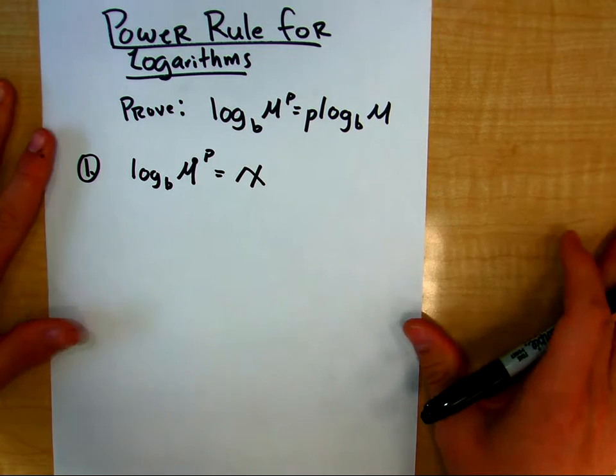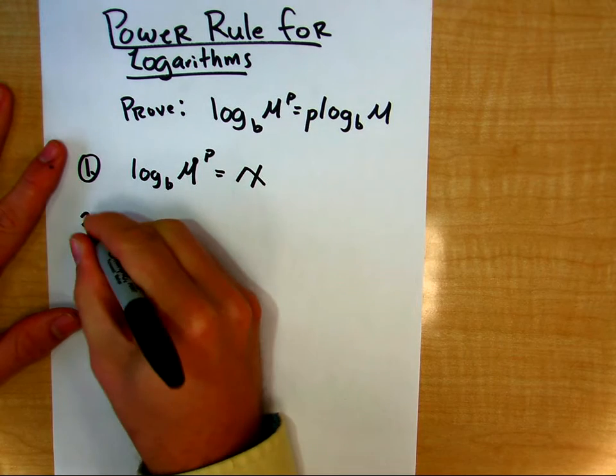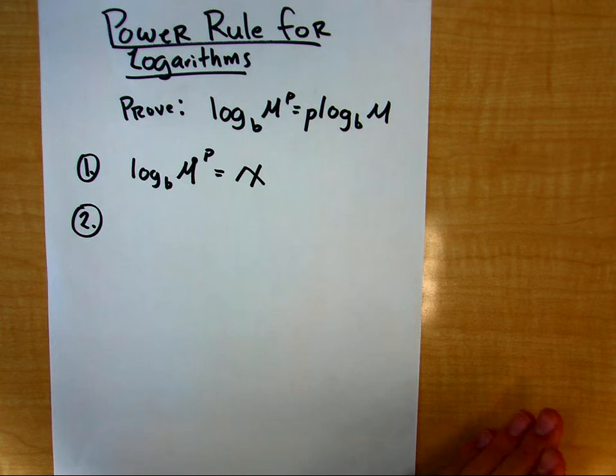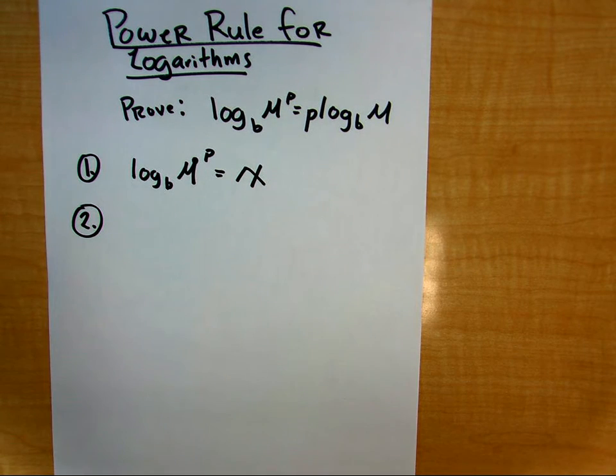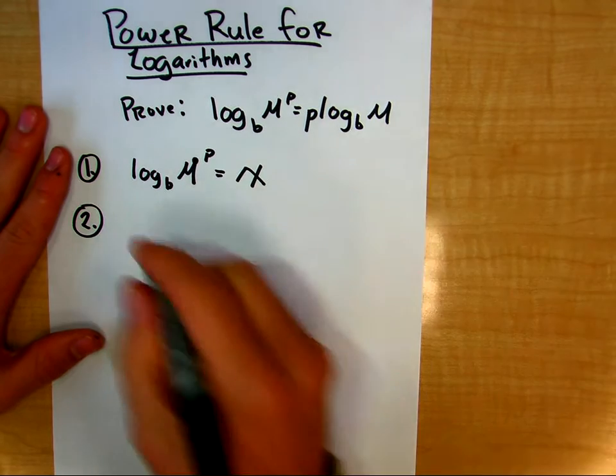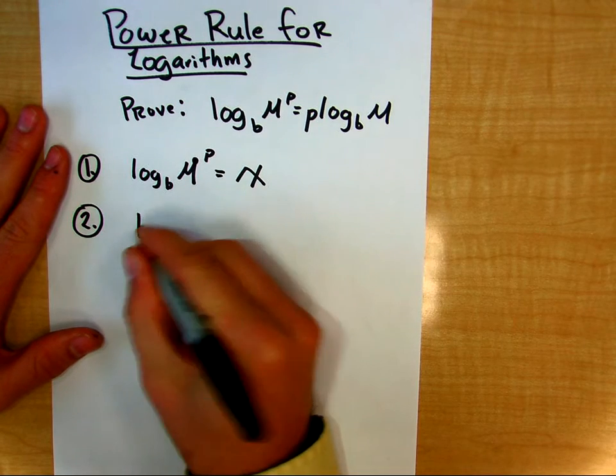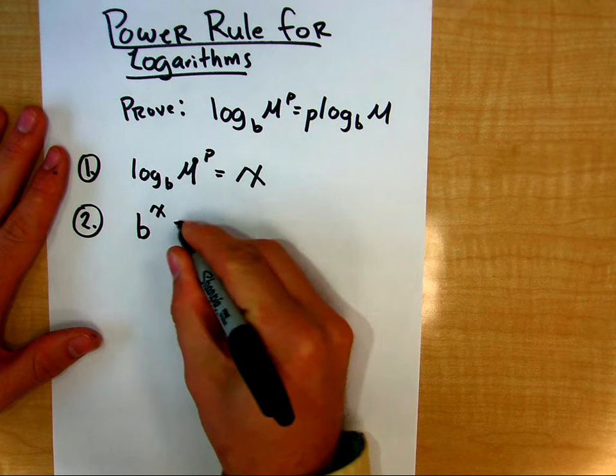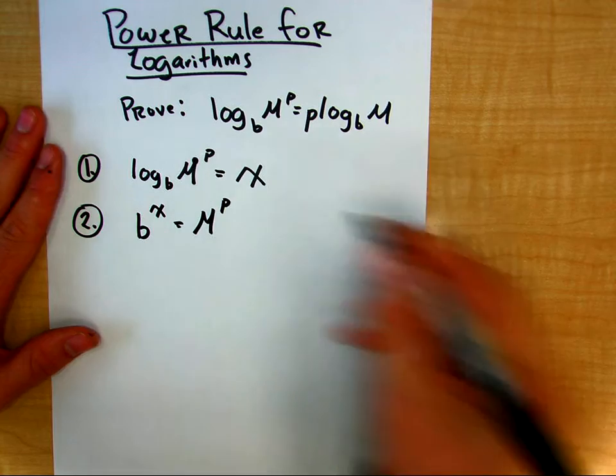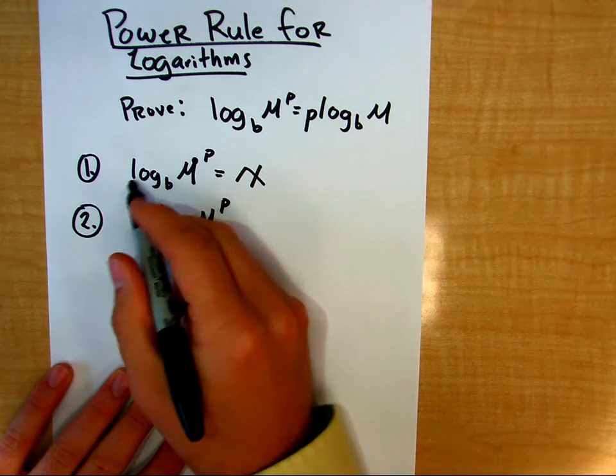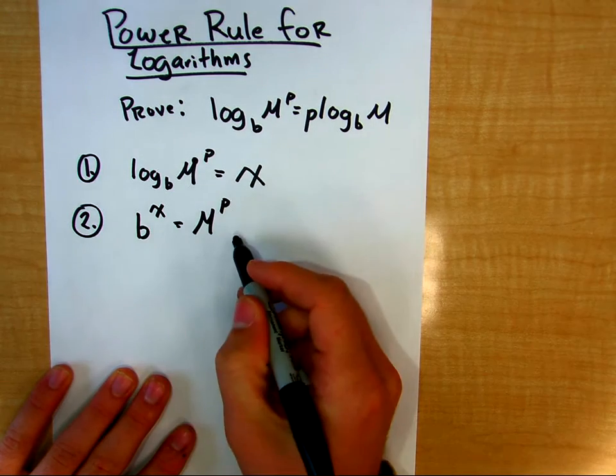A common thing that we like to do is change things from logarithmic notation to exponential notation and see what we can discover in that way. So we're going to say b raised to the x power is equal to m raised to the p power. All I did here was change from logarithmic notation to this exponential notation.